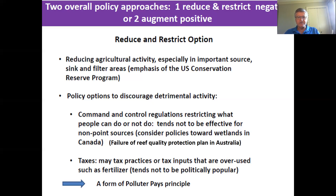In Australia, to deal with Great Barrier Reef degradation, Australia had a Reef Quality Protection Plan starting in 2003. Part of that included regulations on the amounts of fertilizers that could be used to reduce runoff of overused fertilizer. But statistics show that has not been very effective — in fact, not a single farmer had actually been convicted or fined for a case of overuse of fertilizer.